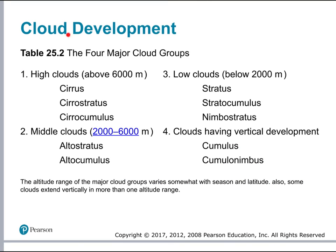There are four major cloud groups. High clouds above 6,000 meters include cirrus, cirrostratus, and cirrocumulus. Middle clouds between 2,000 and 6,000 meters are altostratus and altocumulus. Low clouds below 2,000 meters include stratus, stratocumulus, and nimbostratus. Then there are clouds with vertical development, including cumulus and cumulonimbus. You don't need to memorize all these types, but we will discuss some of their differences.